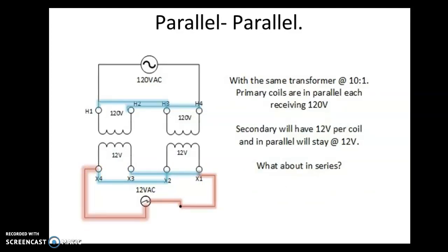In a parallel parallel transformer configuration, you would see full voltage applied to each coil. That means the primary, each coil is only rated to handle 120 volts, which is exactly what we're applying to it. So at 10 to 1, each coil can handle 120 volts on the primary and 12 volts per coil on the secondary.